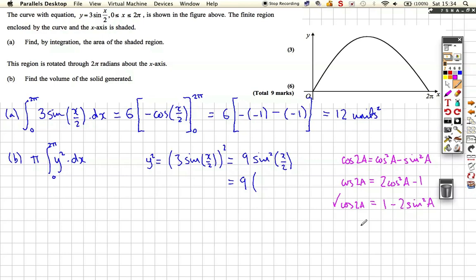If we rearrange it - take the sin² over here and the cos 2a over here, then divide by 2 - we get sin² on its own. This is a common form you have to use. So sin²a = (1 - cos2a)/2.